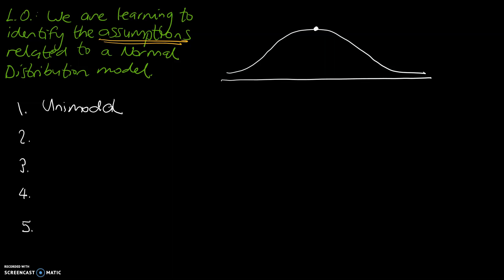The next one is if you draw a line down from that peak, we can actually see the left-hand side and the right-hand side are mirror images of each other. That suggests that any normal distribution model, there must be an element of symmetry, and that leads to our second assumption.